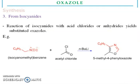From isocyanides: reaction of isocyanide with acid chloride or anhydride yields substituted oxazoles. You can see isocyanomethylbenzene reacts with acetyl chloride in the presence of butyl lithium to give 5-methyl-4-phenyloxazole.